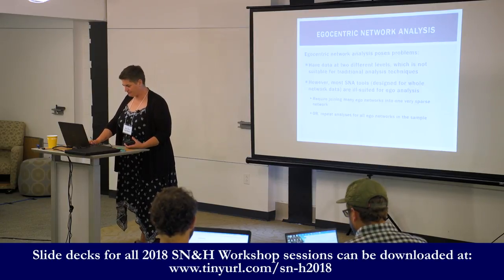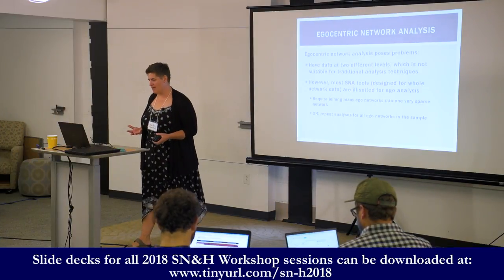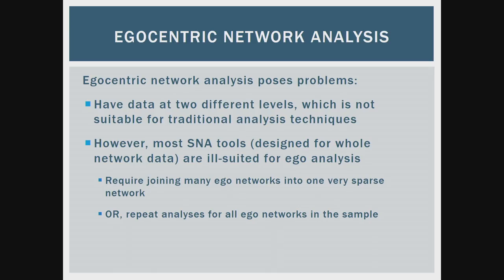Egocentric network analysis poses some problems. It's more difficult than having regular data because you have data at two different levels. This is not suitable for traditional regression analysis techniques for reasons we'll talk about in a minute. Most tools designed specifically for social network analysis aren't a good fit either, because you either have to join lots of ego networks together into one big what Steve Borgatti calls a galaxy of ego networks, or repeat the analysis for every ego network in your sample.